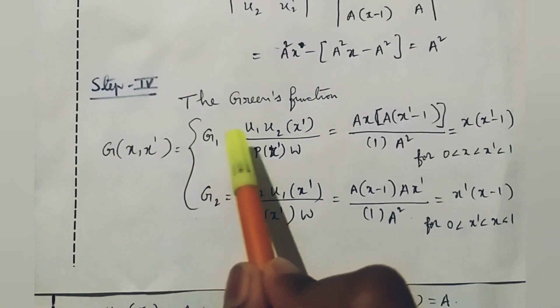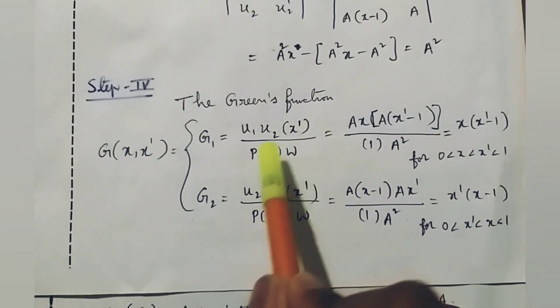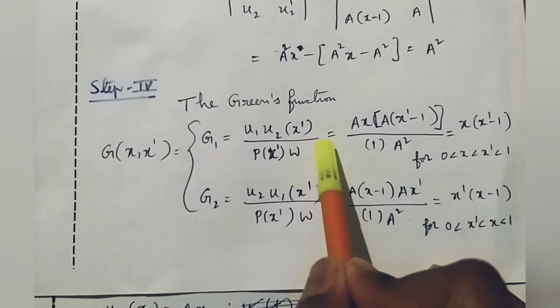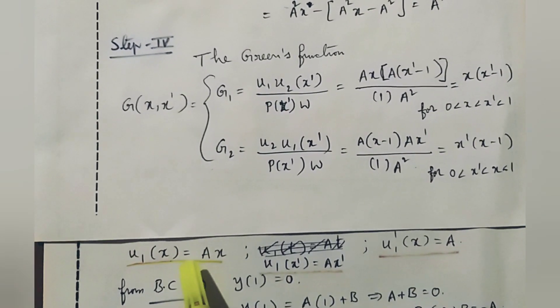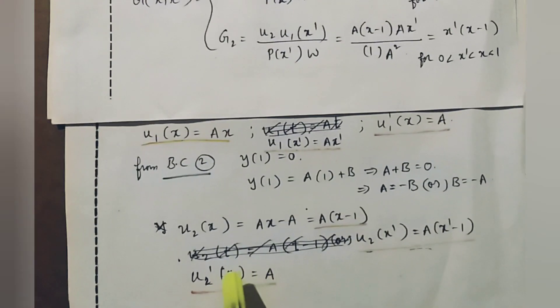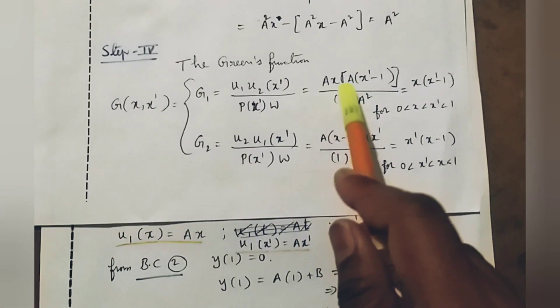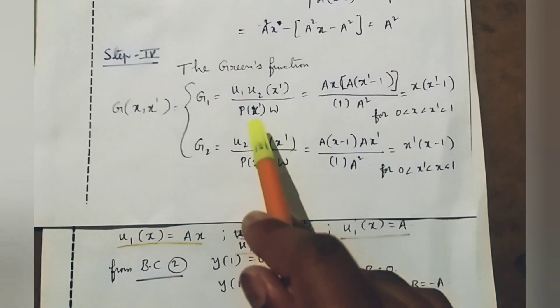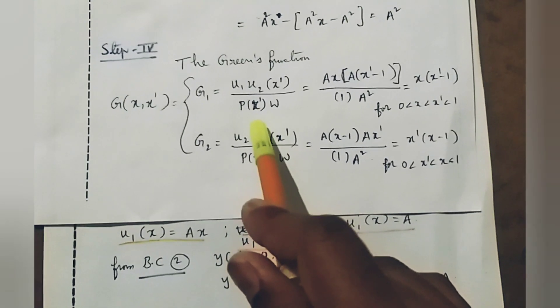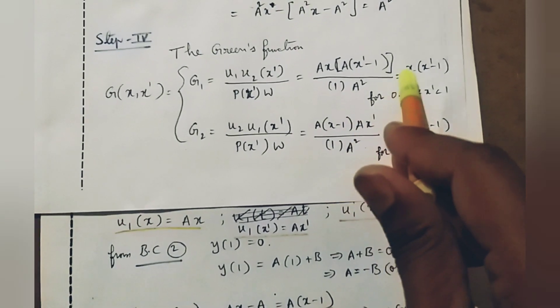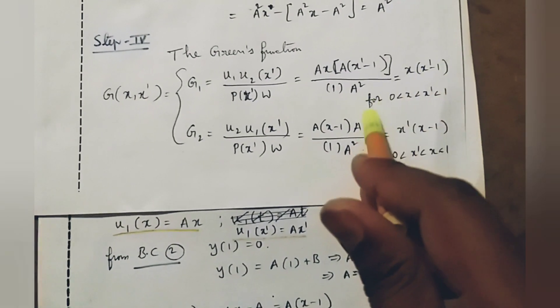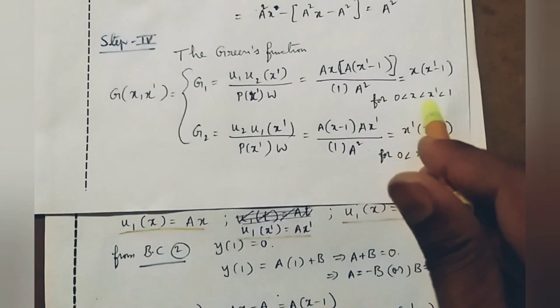Step four: the Green's function G(x, x') — for z₁, equal to u₁ times u₂(x') divided by p(x') times W. Here u₁ equal to ax, u₂ of x' equal to a(x' minus 1), p(x') is the coefficient of the second derivative term which equals 1, and W equals a squared. This simplifies to x(x' minus 1), for 0 less than x less than x' less than 1.